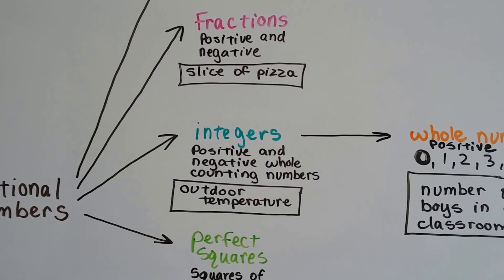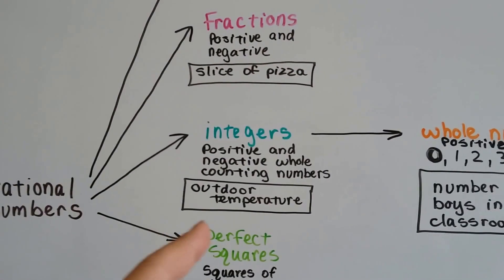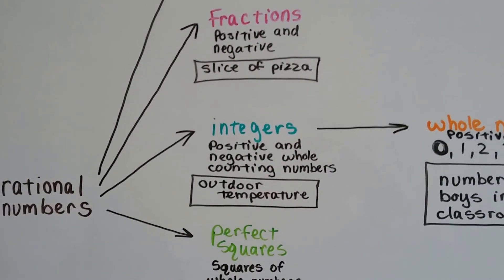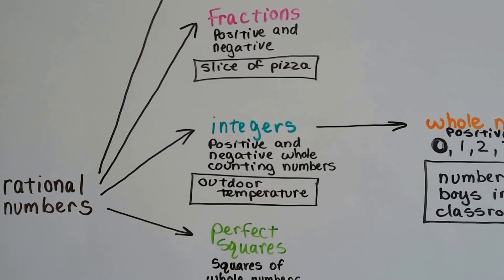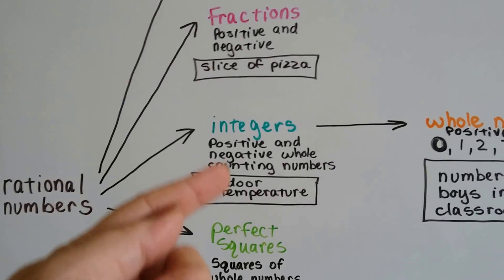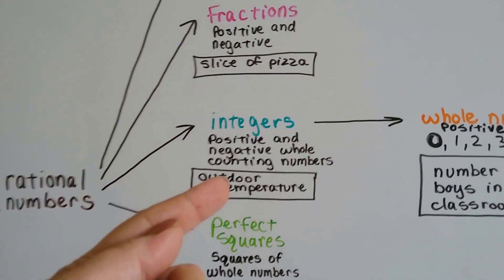Integers, positive and negative whole counting numbers. It would be like the outdoor temperature. It's eight below wind chill factor or it's a 72 degree day. Those are positive and negative counting numbers. Those are integers.